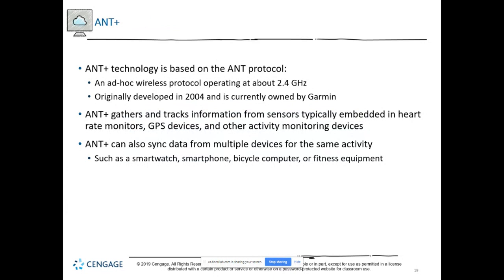ANT Plus is a technology based on the ANT protocol. It gathers information from sensors typically embedded in heart rate monitors, GPS devices, and other activity monitoring devices — for example, smartwatches that monitor the activities of athletes. It also synchronizes that data across multiple devices for the same activities, such as a smartwatch, smartphone, and similar devices. It's useful in heart monitoring, GPS settings, and athletics.